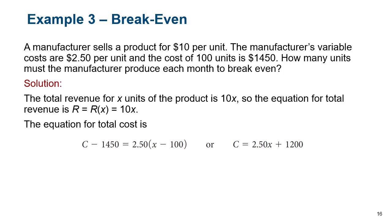Here's an example: you sell a product for $10 per unit. Variable costs are $2.50 per unit, and the cost of 100 units is $1,450. How many units must a manufacturer produce each month to break even? Given that information, the revenue for x units is just 10x because we make $10 per unit sold. Now for the cost equation, we know $1,450 was our total cost when we produced 100 units.